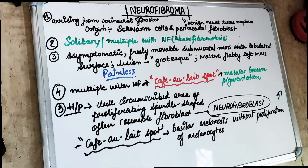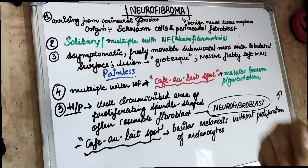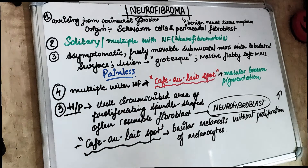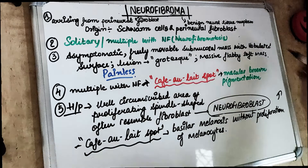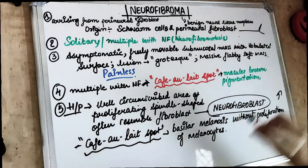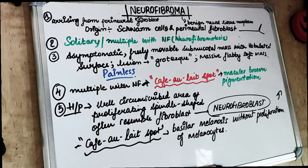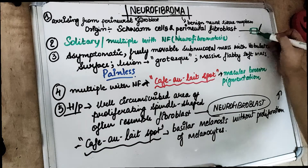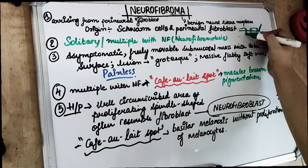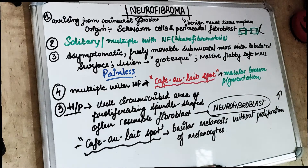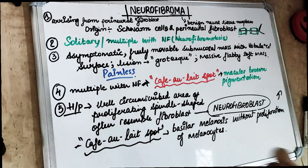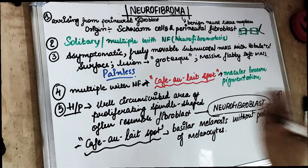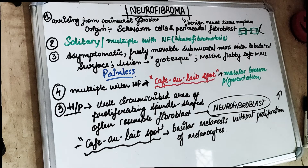The cells which are increased in number are either the perineural fibroblasts or the Schwann cells. Schwann cells are present at the peripheral areas — they are present as a membrane on the peripheral zones and are the cells involved with myelin sheath production. So either there is going to be an increase in the proliferation of the perineural fibroblasts or the Schwann cells.